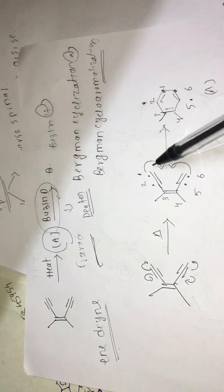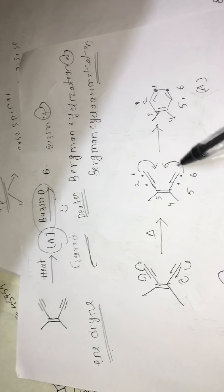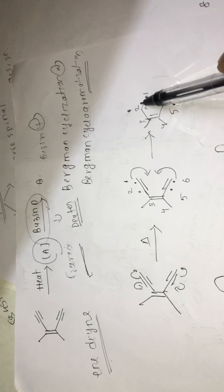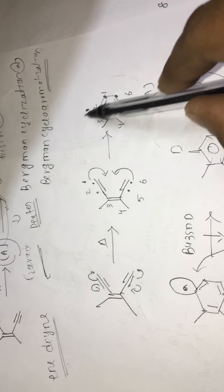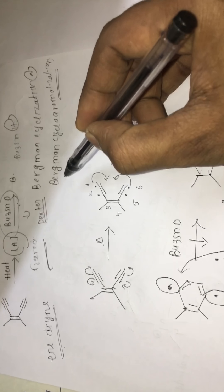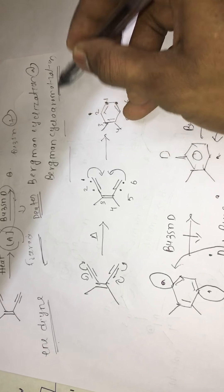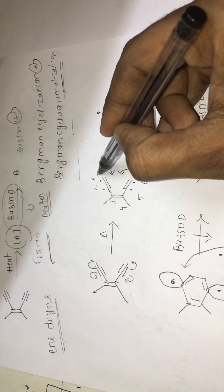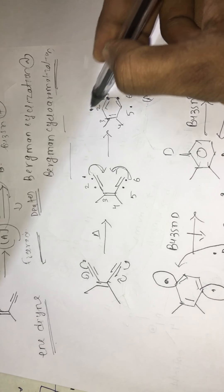So that in here we generate the free radical. And this free radical will come together. They form cyclization. And after that to generate the aromatic cyclization, first cyclization is taking place. After aromatization is developing.